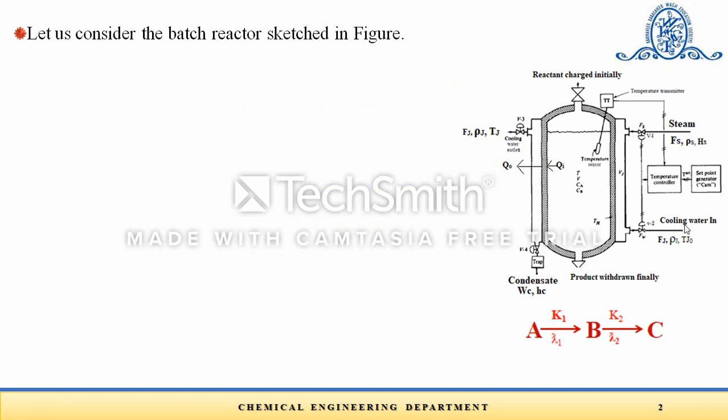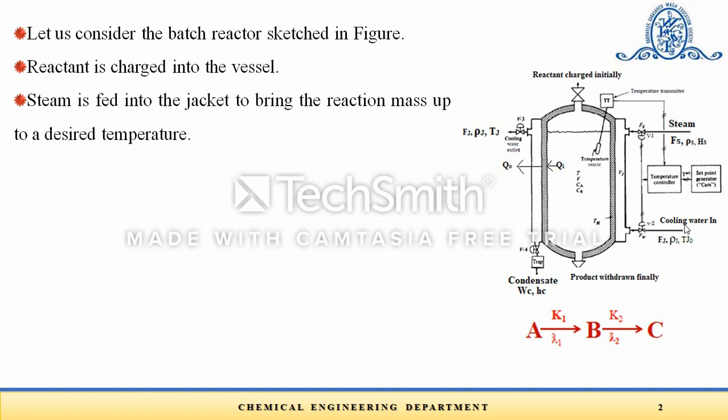Let's consider a batch reactor as sketched in the figure. Reactant is charged into a vessel initially and steam is fed into a jacket to bring the reaction mass up to a desired temperature. The steam is fed with steam rate Fs, having density rho_s and enthalpy h_s. The steam provides heat to the reaction mass to bring it up to the desired temperature, then the steam gets condensed and is separated from the bottom of the jacket with feed rate Wc having enthalpy h_c.